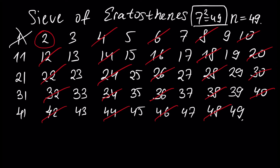The next number, three, will be the next prime number. By definition it is divisible only by three itself and one, and it is not divisible by two because we already crossed out all multiples of two. That's why number three is a prime number. Let's cross out all the multiples of three: six is already crossed out, nine, twelve is crossed out, fifteen, eighteen is crossed out, twenty-one, twenty-four is crossed out, twenty-seven, thirty is crossed out, thirty-three, thirty-six is crossed out, thirty-nine, forty-two is crossed out, forty-five, and forty-eight is crossed out.